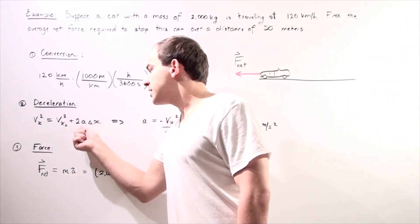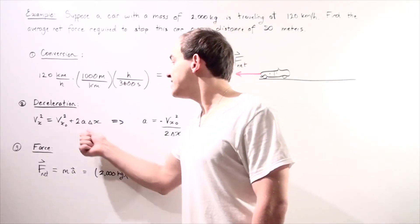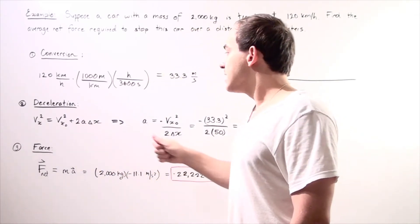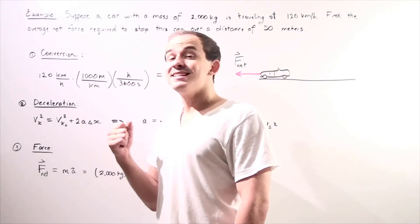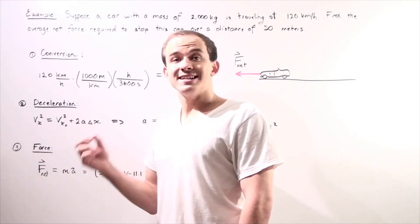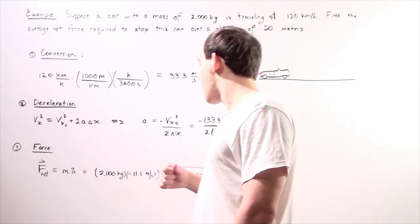Now, our initial velocity is given. Our final velocity is zero. We want our car to come to a complete stop.